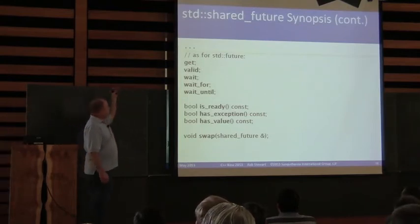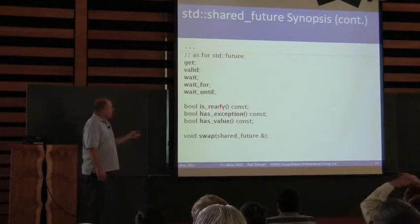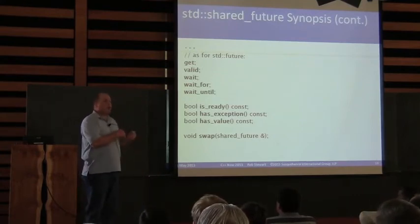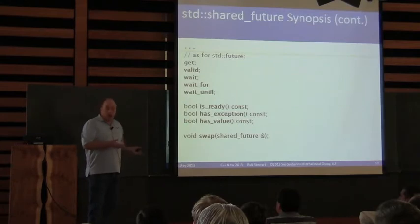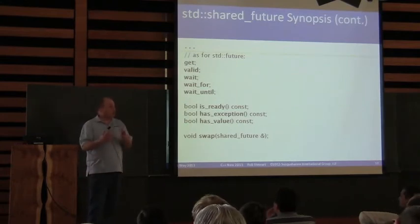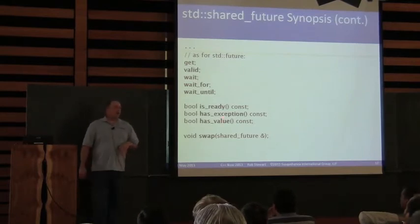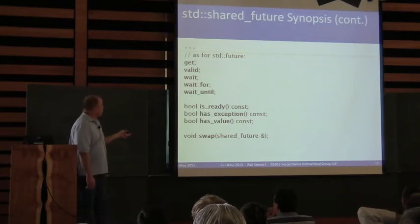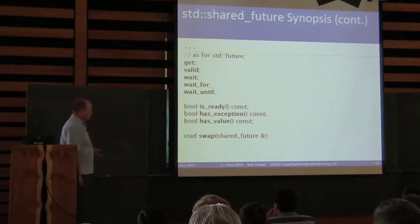Same as for std::future, we've got get, valid, wait, wait_for, wait_until — all that good stuff, working the same way. We also have is_ready, which future didn't have. Future has valid so you know whether there's even an asynchronous result to retrieve, but is_ready simply tells you it's now ready — so if you call get, it won't block. has_exception and has_value tell you whether you actually got a value from the asynchronous task or whether it threw an exception — it's telling you whether get will return a value or throw.